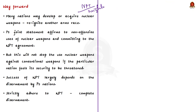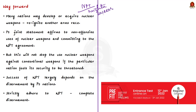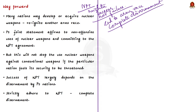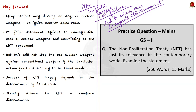We can conclude that the NPT is neither a complete success nor a complete failure. Its success largely depends on the P5 nations, especially China. It is the moral duty of P5 nations to strictly adhere to the NPT and work toward ending the arms race and eventually achieving complete disarmament.